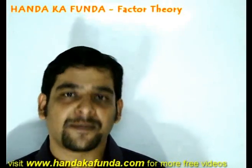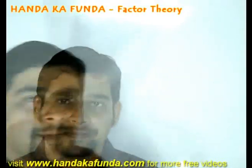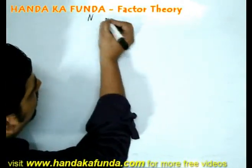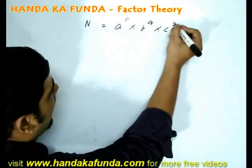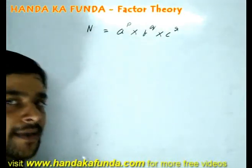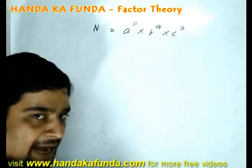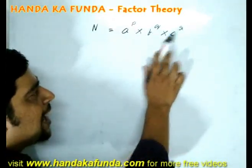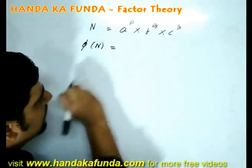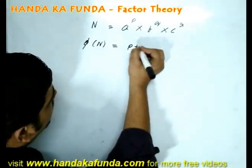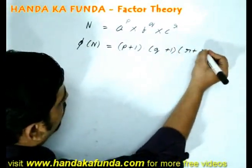Please remember, a lot of students make mistakes in this. 1 is neither a prime number nor a composite number. Suppose I have a number which is of the format of a to the power p into b to the power q into c to the power r. Then what is the number of factors that it is going to have? Please remember, a, b, c are prime numbers and p, q, r are their integral parts. Number of factors of n will be given by p plus 1 into q plus 1 into r plus 1 and so on.